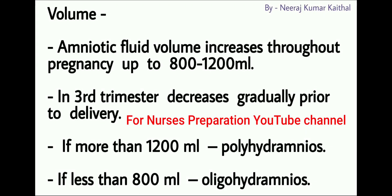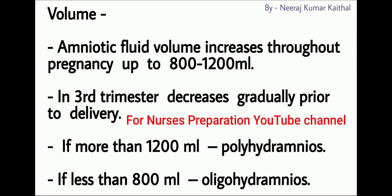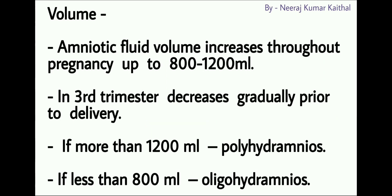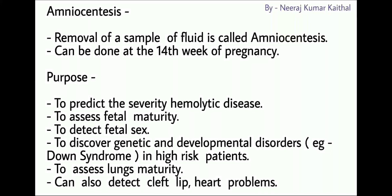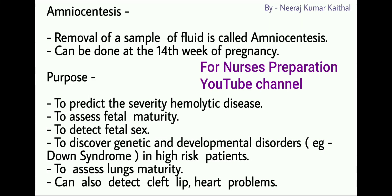Amniotic fluid volume increases throughout pregnancy, up to 800 to 1200 ml in the third trimester, then decreases gradually prior to delivery. If the amniotic fluid is more than 1200 ml, this condition is known as polyhydramnios. If the amniotic fluid amount is less than 800 ml, this condition is known as oligohydramnios.